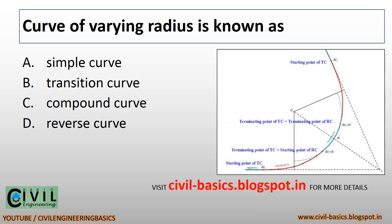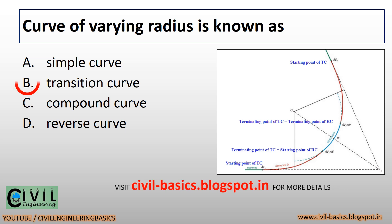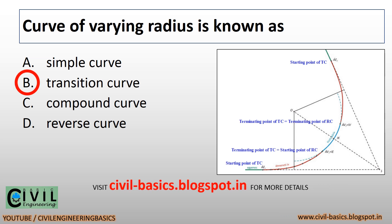Curve of varying radius is known as transition curve. You can see the diagram of transition curve.